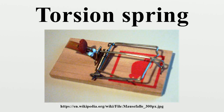If an unknown force is applied at right angles to the ends of the bar, the bar will rotate, twisting the fiber, until it reaches an equilibrium where the twisting force or torque of the fiber balances the applied force. The magnitude of the force is proportional to the angle of the bar. The sensitivity of the instrument comes from the weak spring constant of the fiber, so a very weak force causes a large rotation of the bar.